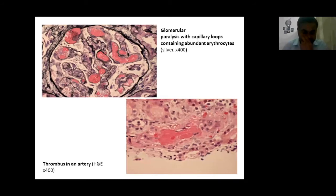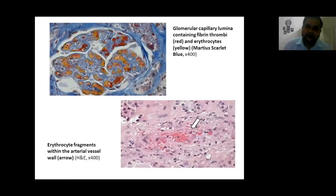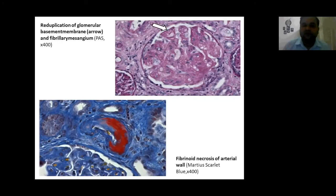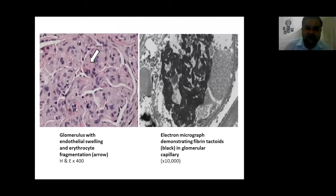These are some pathologic pictures on microscopy with various stains. One shows glomerular paralysis with capillary loops with erythrocytes and thrombus in the artery. The Masson's trichrome stain shows glomerular capillary luminal fibrin thrombus with erythrocytes in yellow, and erythrocyte fragments within arterial vessels. There is also intimal thickening and obliteration of lumen of small artery causing end organ dysfunction, end arterial occlusion causing ischemic injury, and intimal thickening of small artery. Reduplication of glomerular basement membrane and fibrillary mesangium on PAS stain, fibrinoid necrosis of arterial wall, glomerulus with endothelial swelling and erythrocyte fragmentation, and an electron micrograph demonstrating fibrin deposits in glomerular capillary.